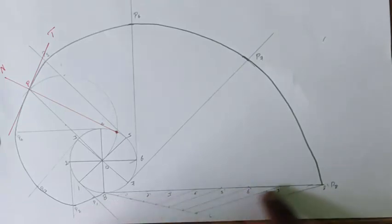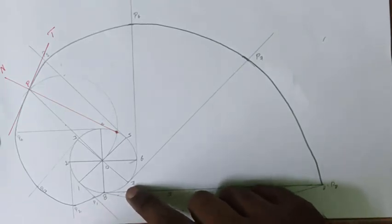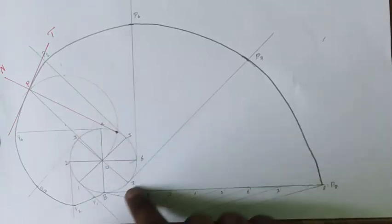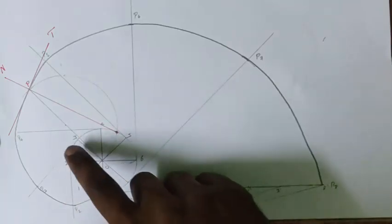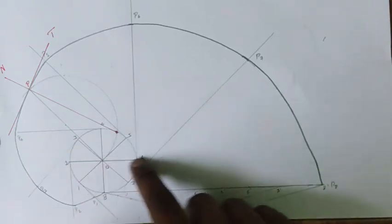And then we have drawn a straight line from the base by having length of pi d. And then we have divided that line into 8 equal parts. And we have extended the points from 1 to 7 by keeping the line perpendicular to the line from which it is having.